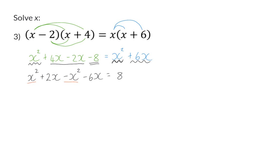And here we have minus 4x is equal to 8. So my final step would be to divide both sides by minus 4. And so x will be equal to minus 2.